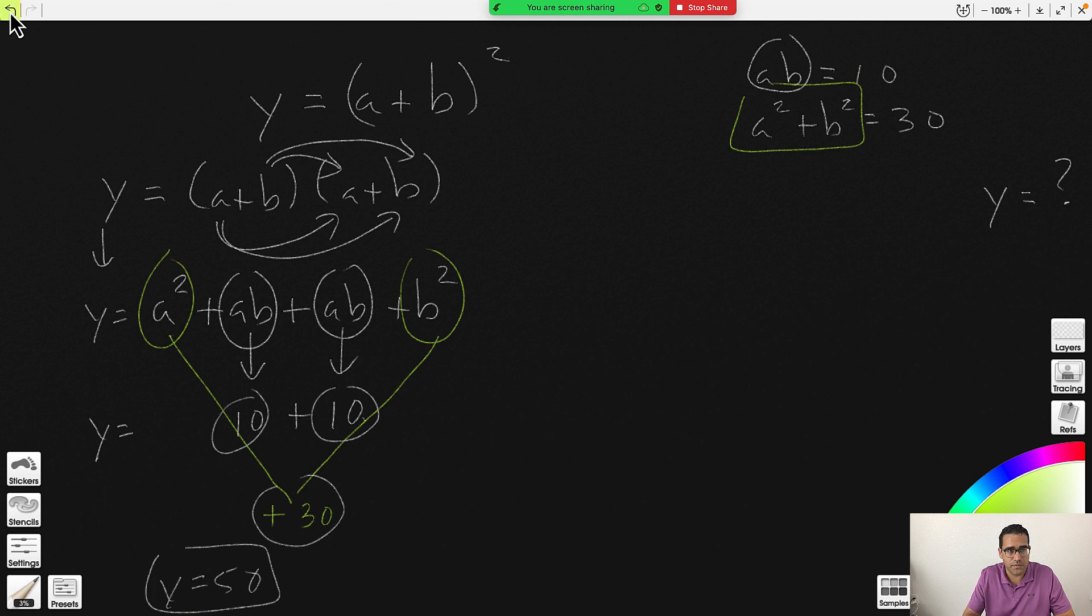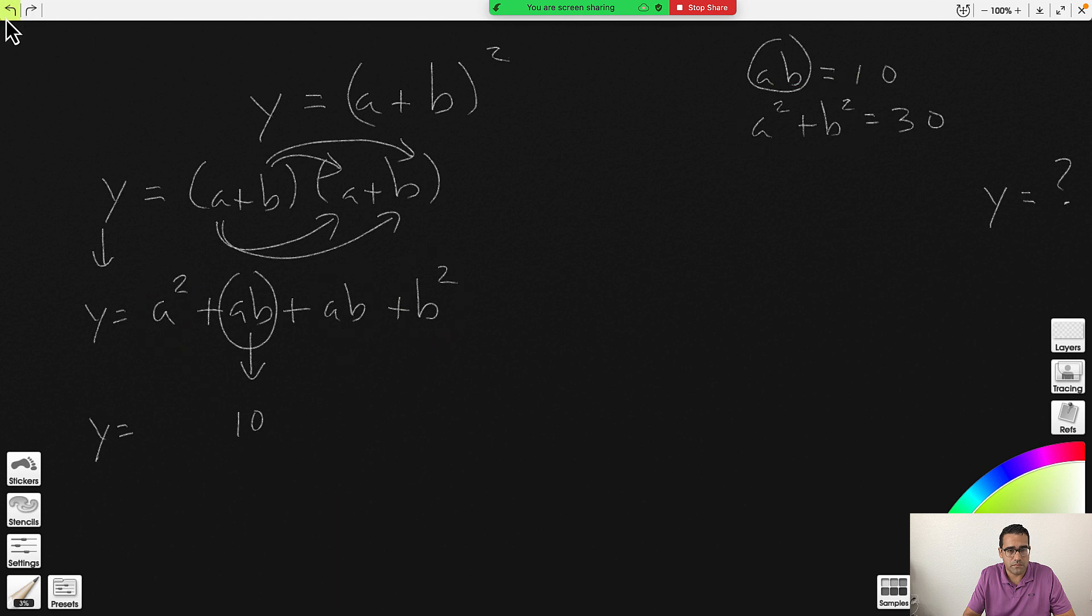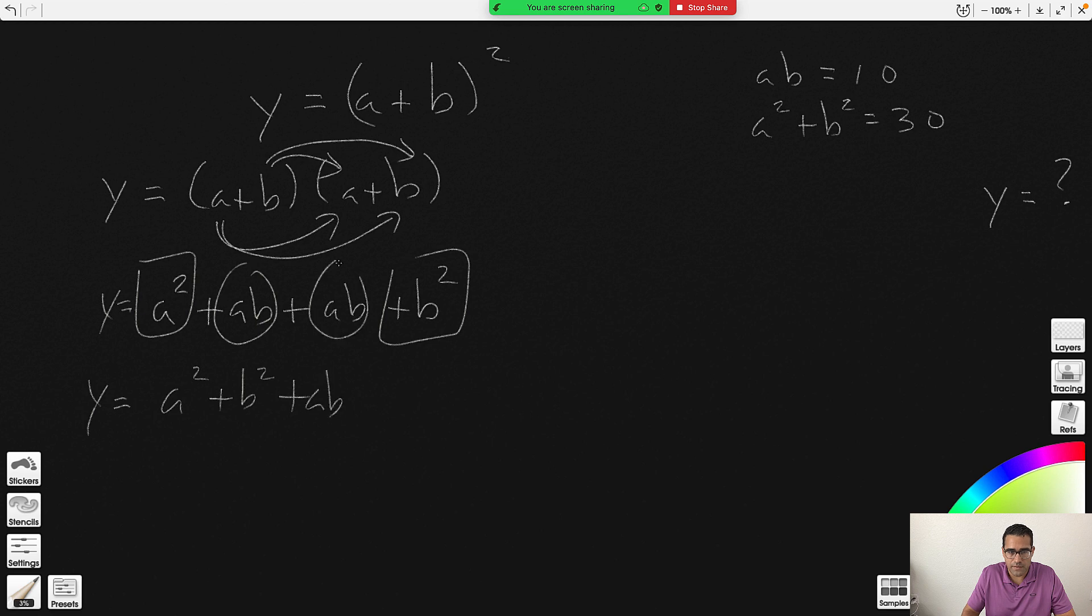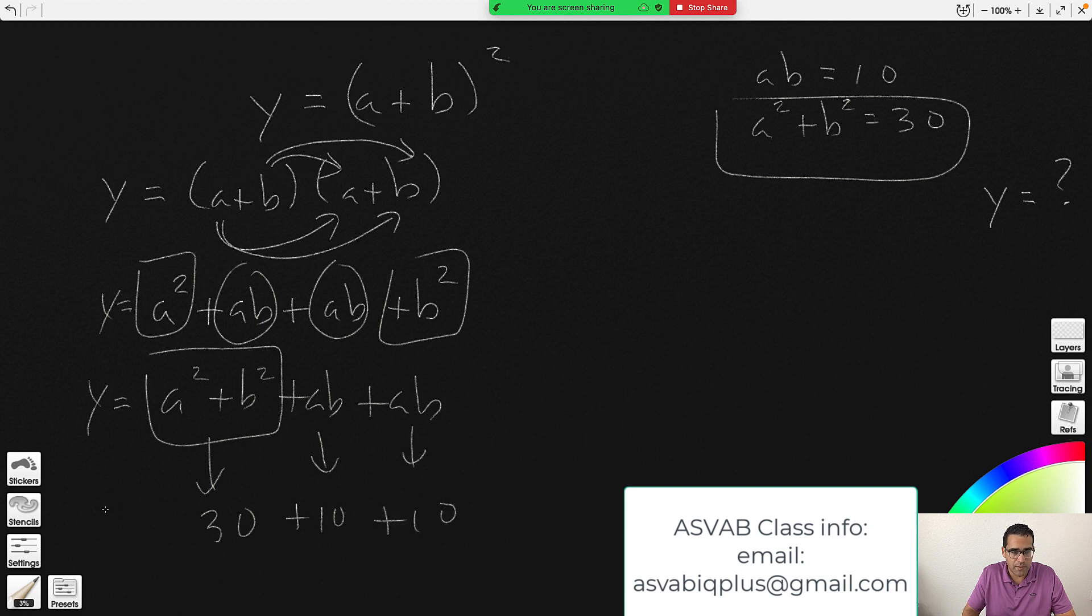Again, if that confused you, you can just rewrite everything. I'm just going to put a² plus a² plus b² next to each other, and then this ab and this ab. All of that is what we have rewritten. a² plus b² is 30, ab equals 10, ab equals 10. And when you add it up, you get y equals 30 plus 10, 40 plus 10, 50.